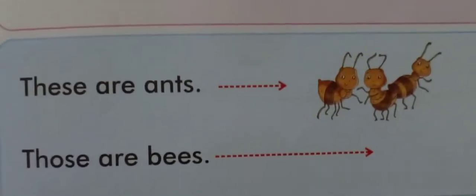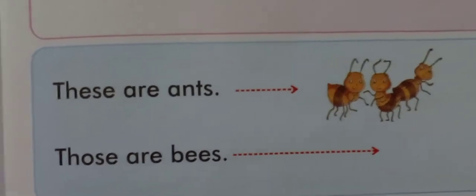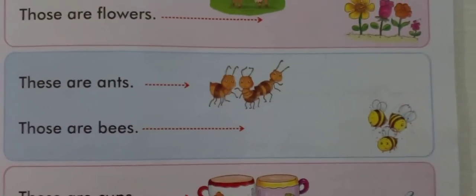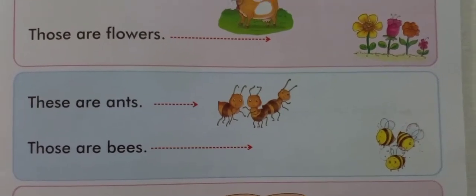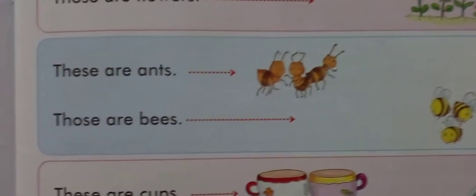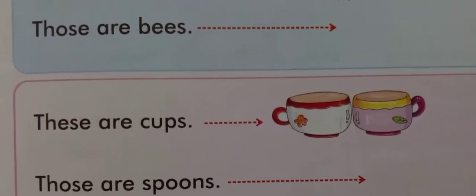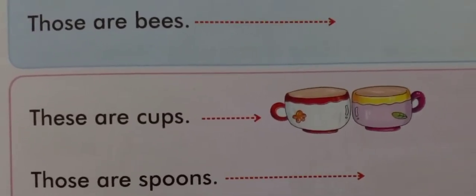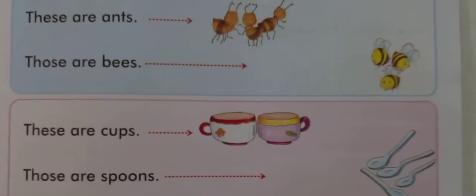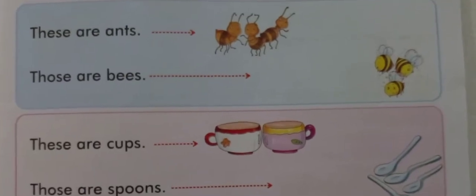Now the ants — look at the picture. These are ants, because they are near to us. And bees — they are so far, so you will say 'those are bees.' They are far from you. The next picture: cups — very beautiful cups. They are very near to you, so you will say 'these are cups.' And the spoons — they are so far, so you will say 'those are spoons.'